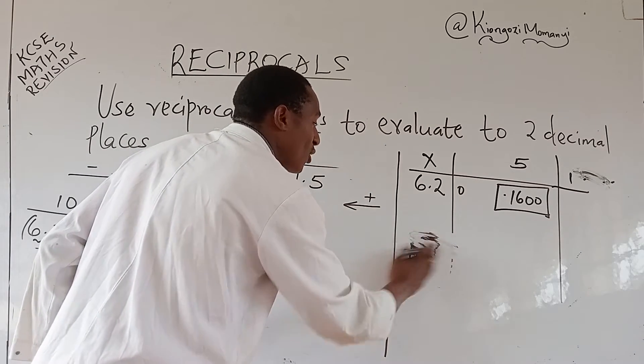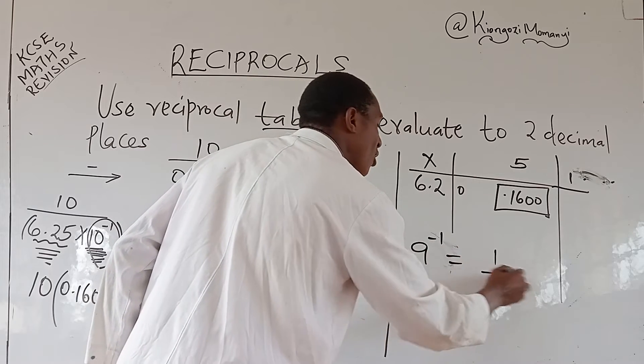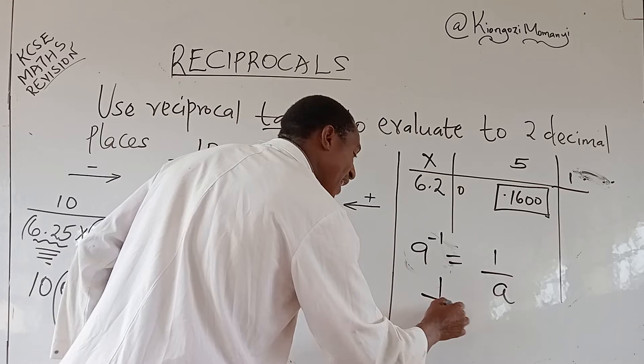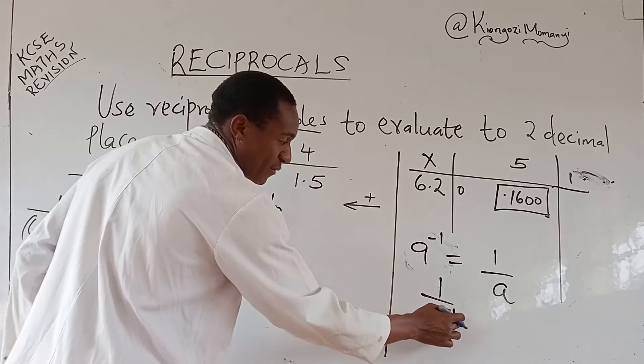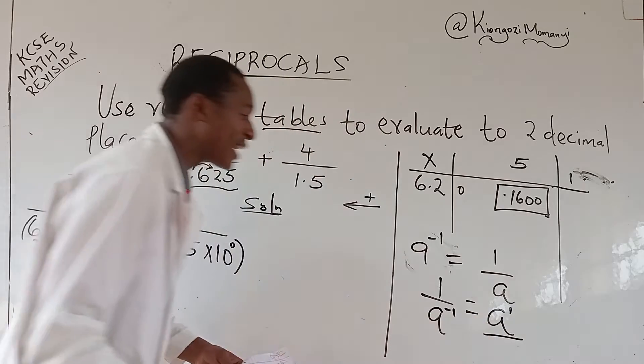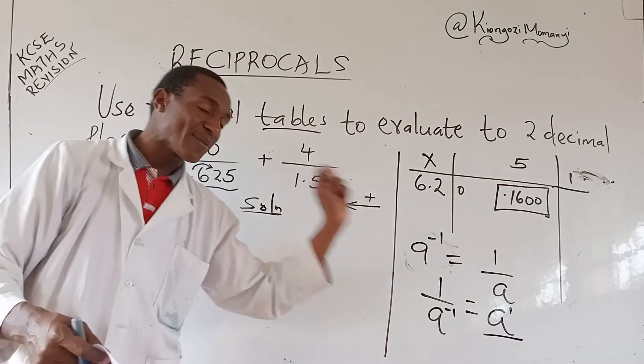10 power negative 1 or a power negative 1 can be written as 1 over a. So if it is 1 over power negative 1, a power negative 1, then it will be a. The reciprocal will be a. So what happens? When it goes to the numerator, the number power is removed.